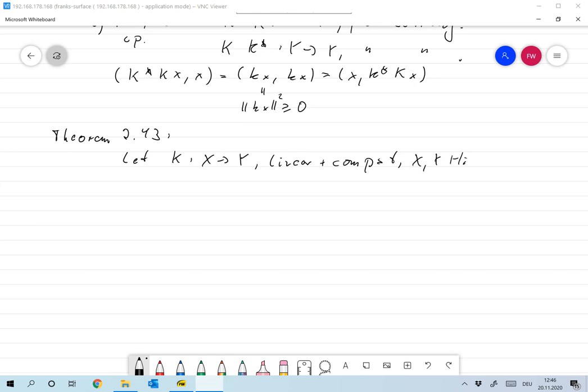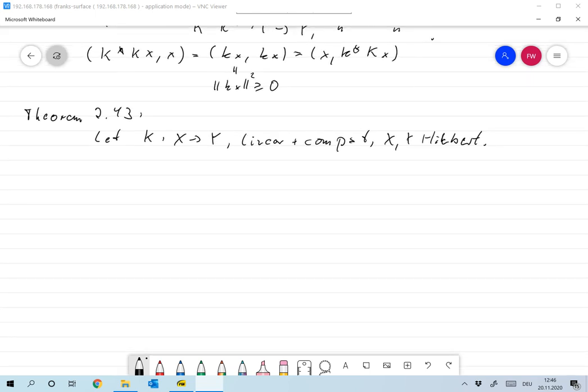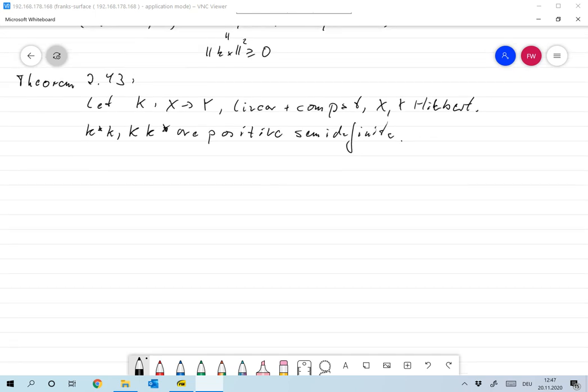And we take Hilbert spaces X and Y. Then as I said above, K* K, K K* are positive semi-definite.